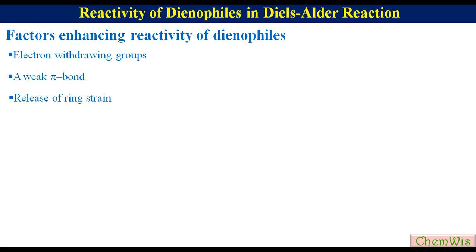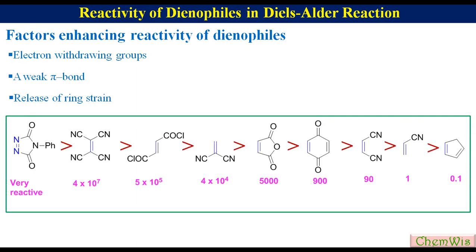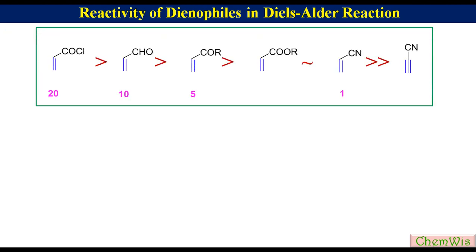This is a series of compounds showing relative reactivity of different compounds with respect to acrylonitrile, where we can see that the more electron-deficient the dienophile, the higher its reactivity. This is one more series in which monosubstituted dienophiles are arranged according to their relative reactivity with respect to acrylonitrile, and we can see that reactivity increases with increasing electron-withdrawing tendency of the substituents.